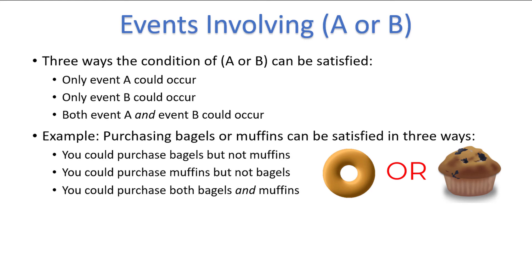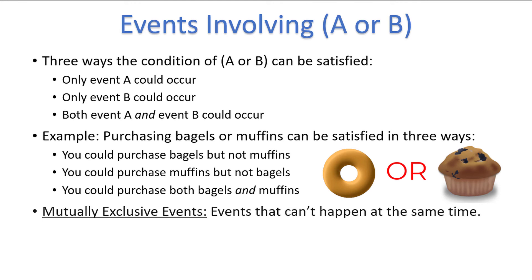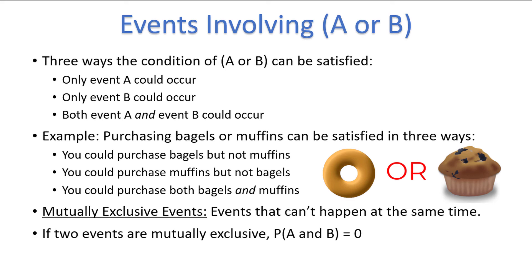Now, in some cases the third condition is actually impossible to fulfill. We call events that cannot happen at the same time mutually exclusive or disjoint events. If two events A and B are mutually exclusive, then the probability that A and B happen together is zero, therefore making the third condition impossible.